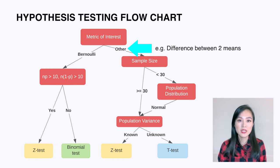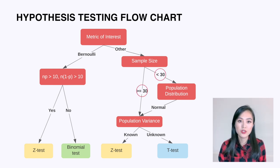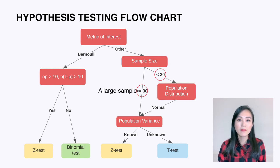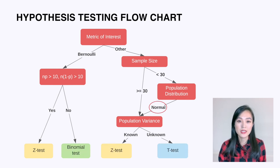If the metric does not follow a Bernoulli distribution — for example, we want to find out how different two sample means are from each other — then the first thing we want to check is the size of the sample. The magic number here is usually 30: 30 or above is considered a large sample and below it is considered a small sample. If it's a small sample, we need to make sure the population is normally distributed in order to use a z-test or a t-test.